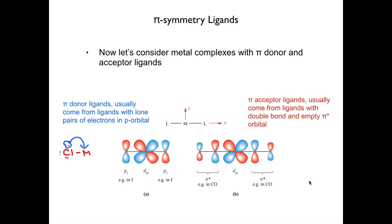By contrast, in a pi accepting ligand we're donating from a metal d orbital into a pi-symmetry orbital on the ligand. The example we used is carbon monoxide: CO is a sigma donor, but it also has a pi star orbital localized on carbon. This pi star orbital is empty — it's the LUMO of carbon monoxide — and it can accept electrons from a metal d-type orbital.